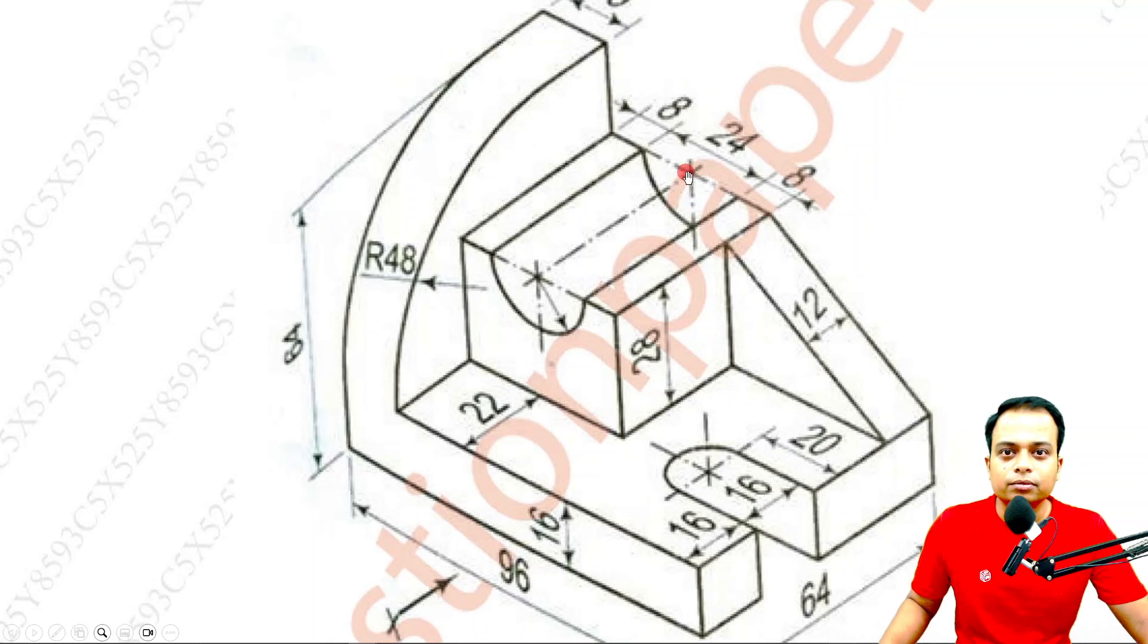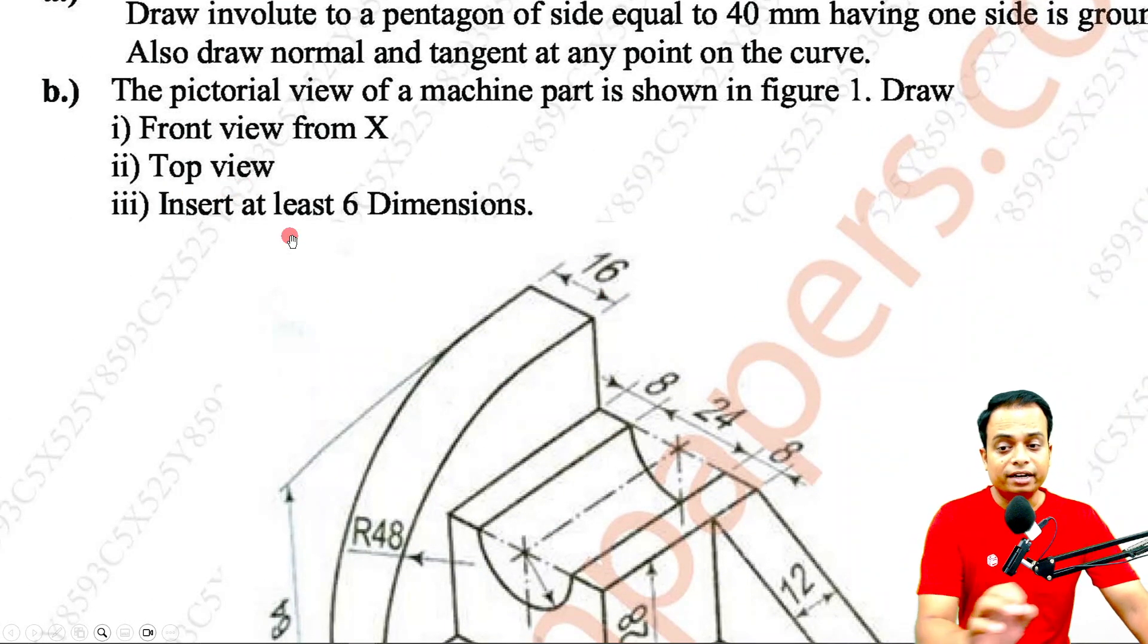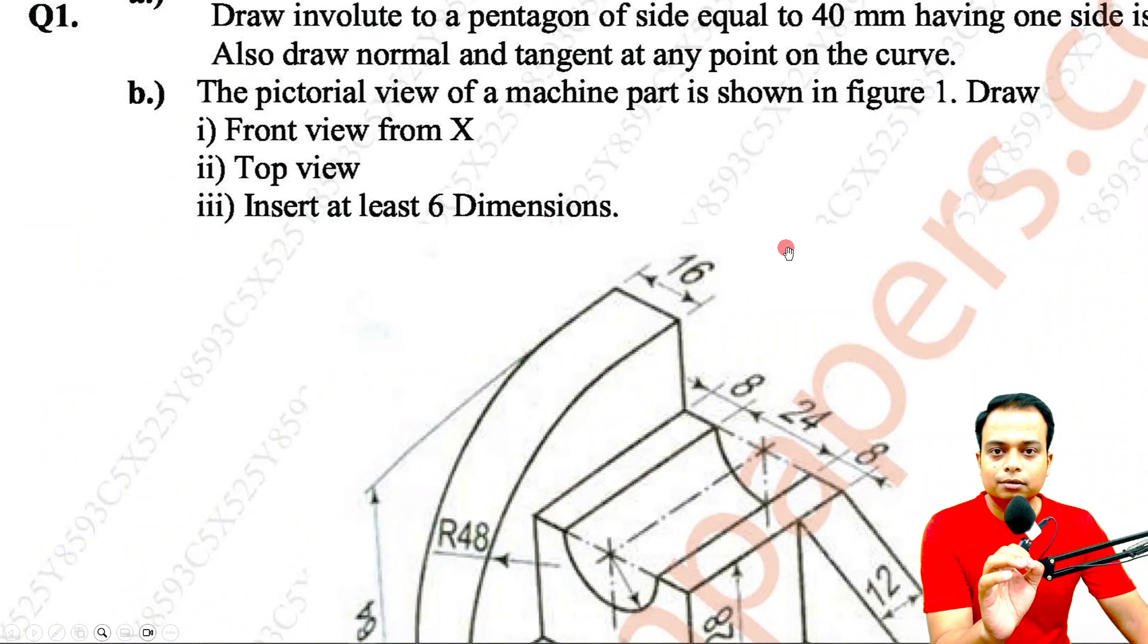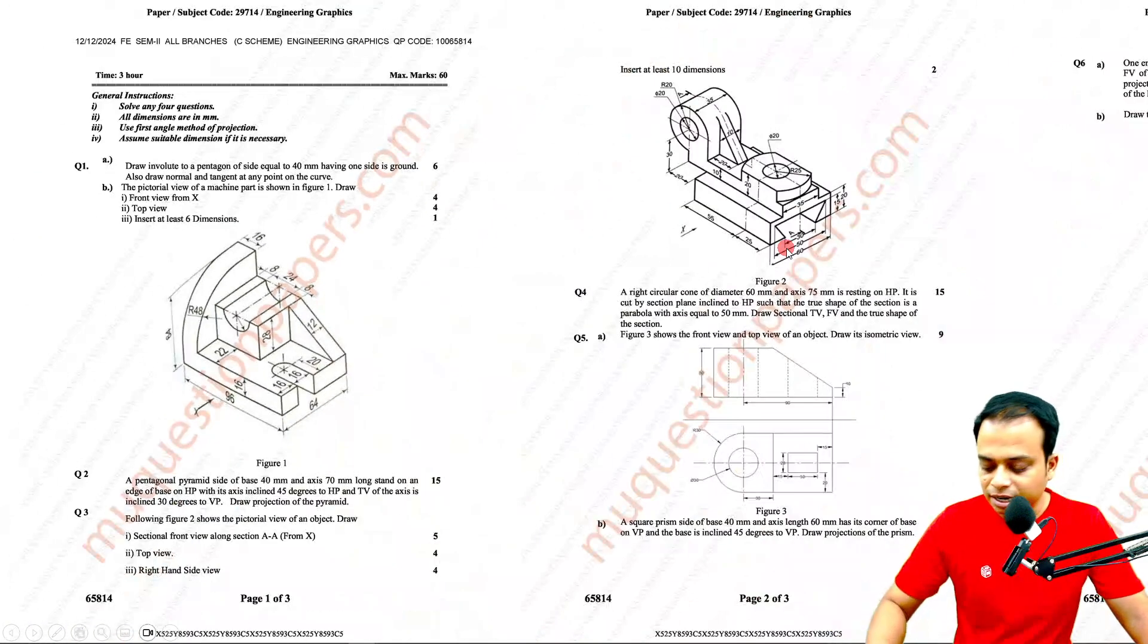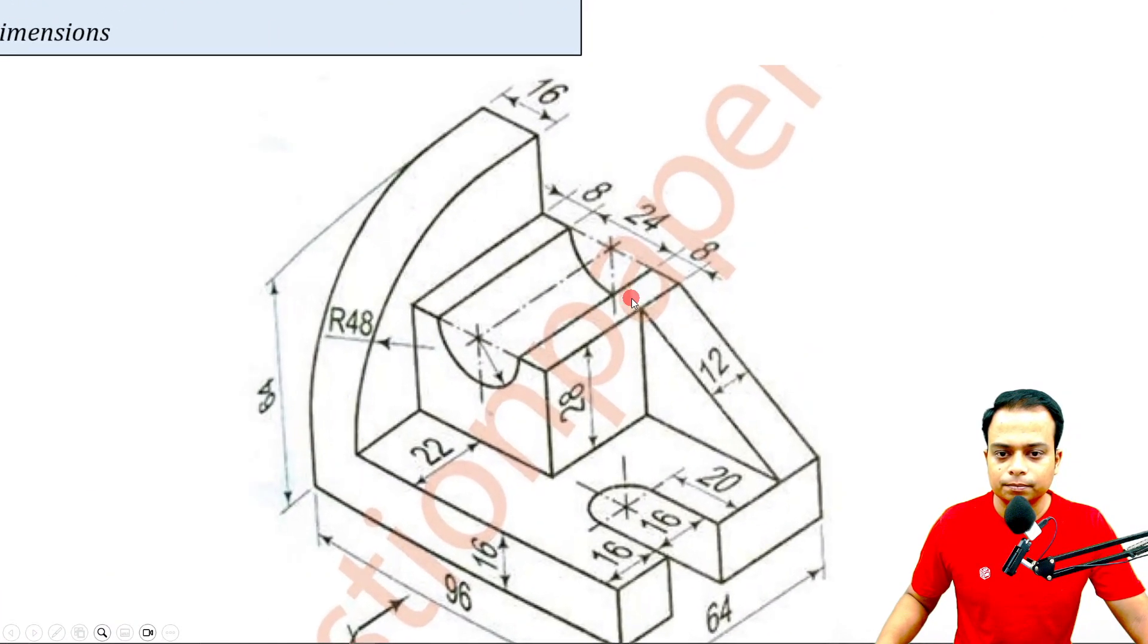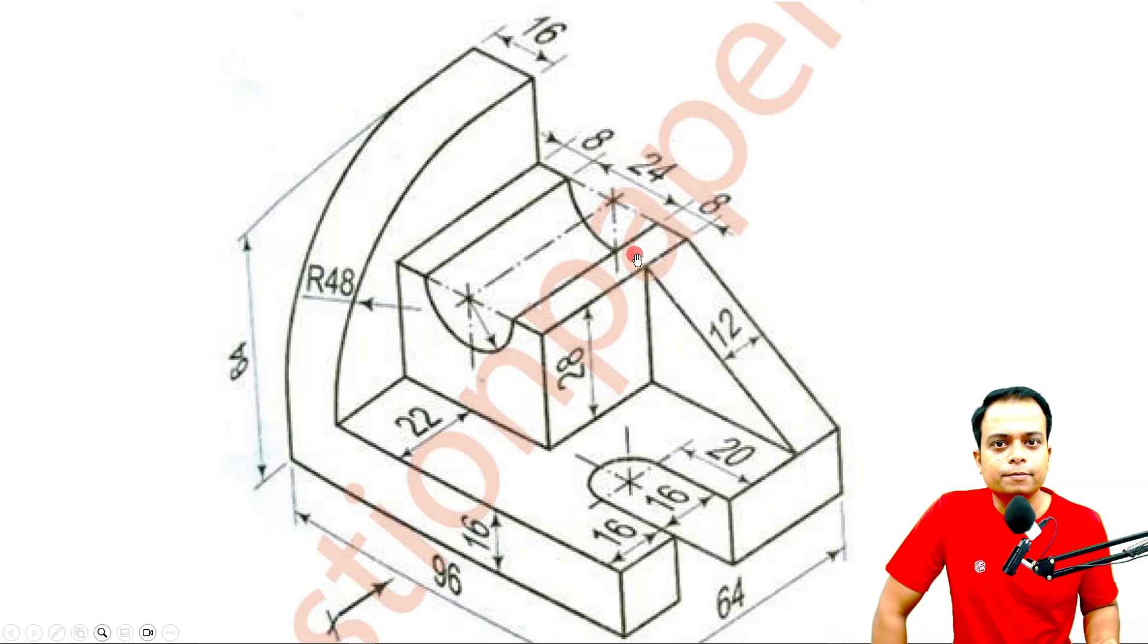Secondly, you need to make the top view. Then in the final third part, which is for one mark, you need to place or insert as many as six dimensions. This can be done easily. I want all of you to observe this object very carefully.